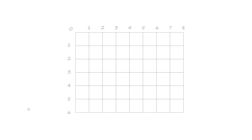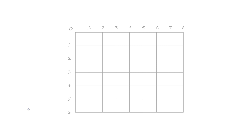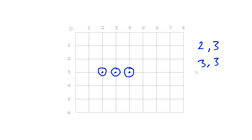Now let's think a little bit about patterns that you see when you have a series of shapes on the canvas. We might want to draw a circle here, a circle here, and a circle here. Let's look at what the coordinates of those would be. This one is at two comma three, this one is at three comma three, this one is at four comma three, and if we add another one it would be at five comma three. Can you see a pattern?